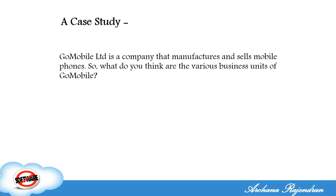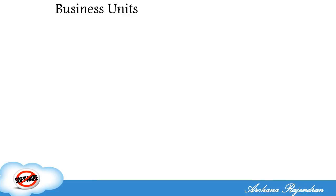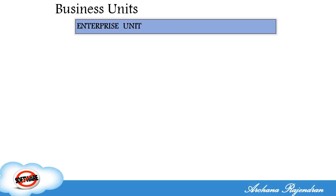Now we are going to sort out the business units of Go Mobile — a company that manufactures and sells mobile phones. Definitely there should be a manufacturing unit. So there comes the enterprise unit, which is the manufacturing unit, and the whole objective of this enterprise unit is to manufacture mobile phones.